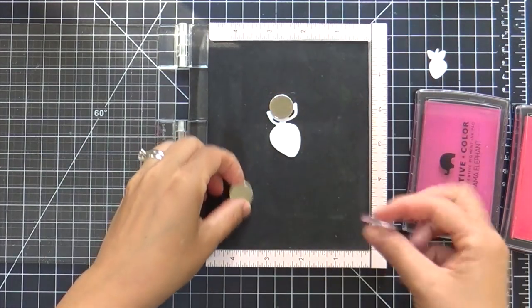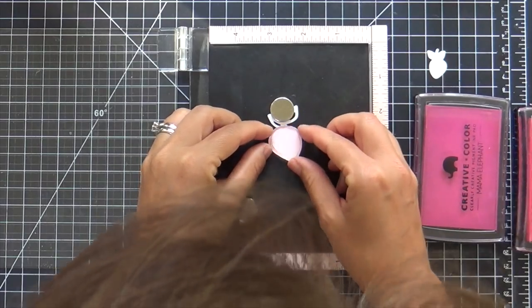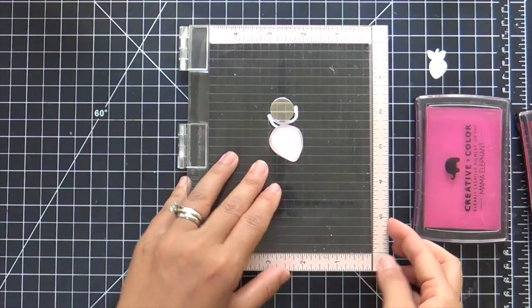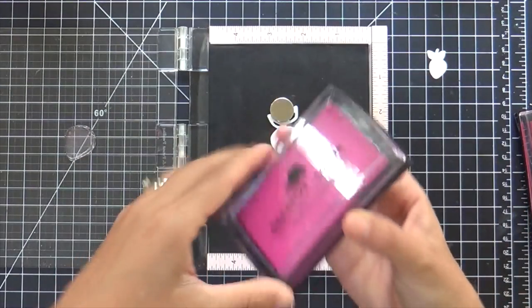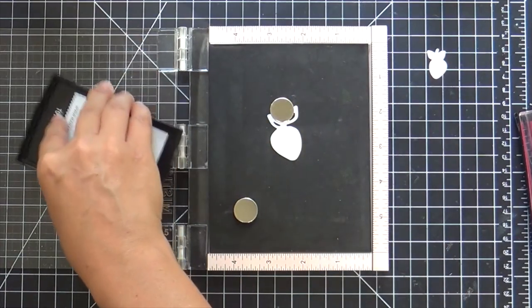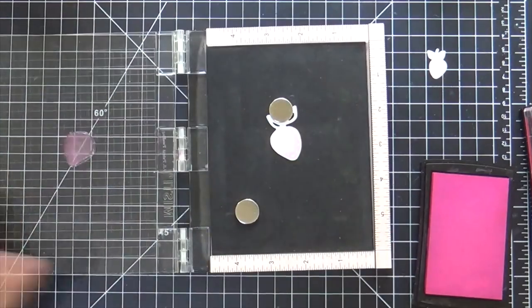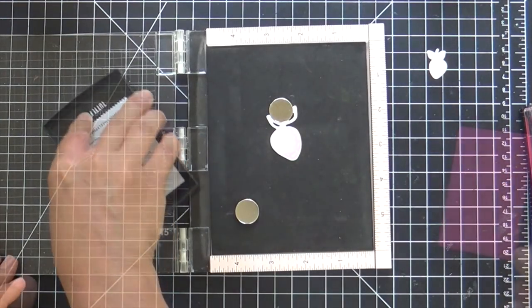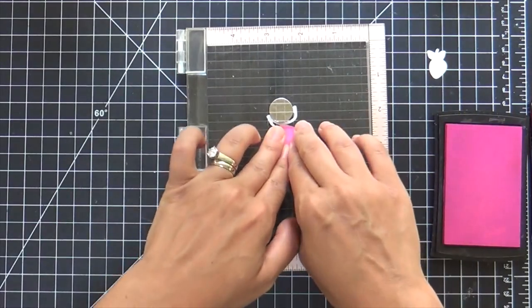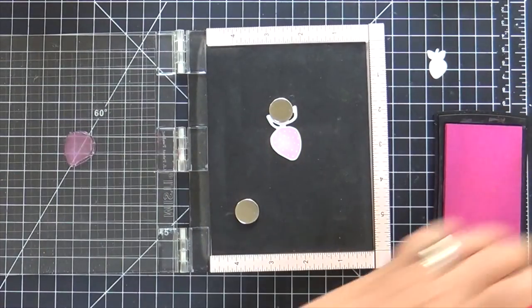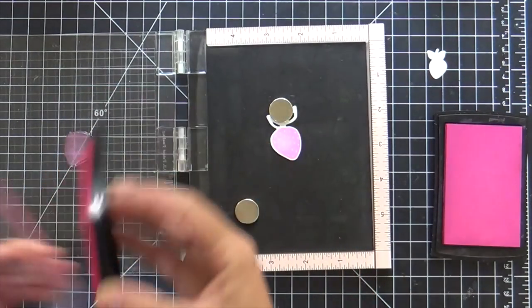So I'm going to start with the larger strawberry, holding it down with one of those misty magnets, lining up that strawberry image. Then I'm going to ink it up with Tutti Frutti Arruda, which is a Mama Elephant pigment ink. I have to sing it. You can't just say Tutti Frutti. You got to sing it.